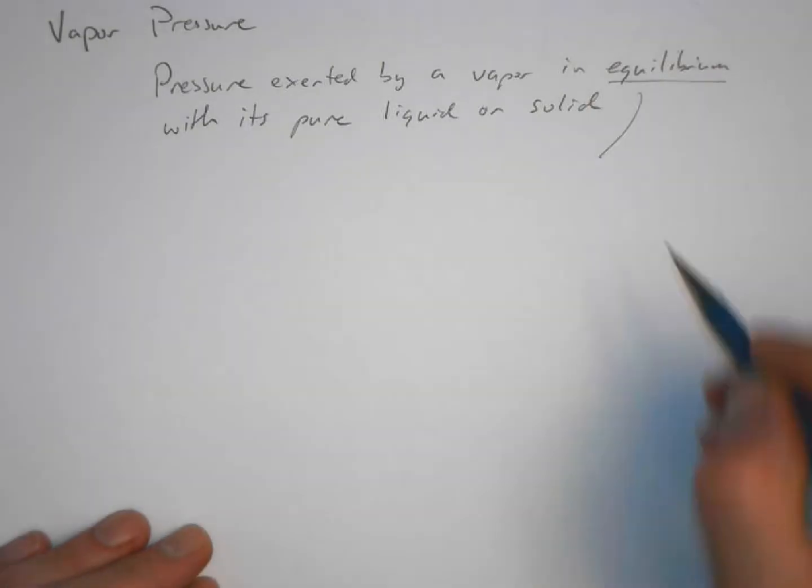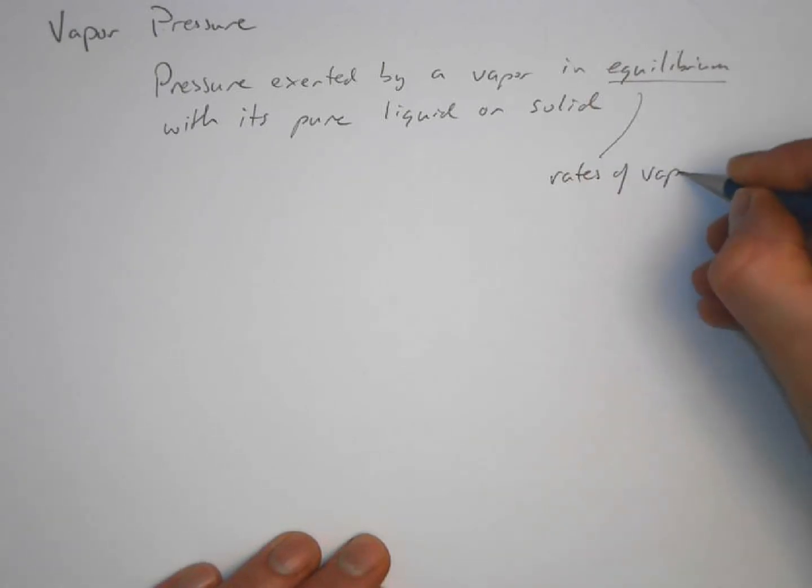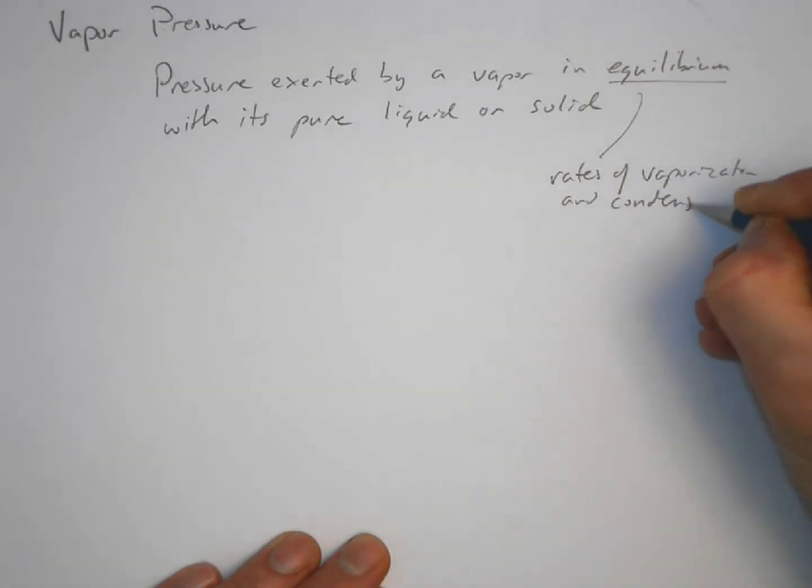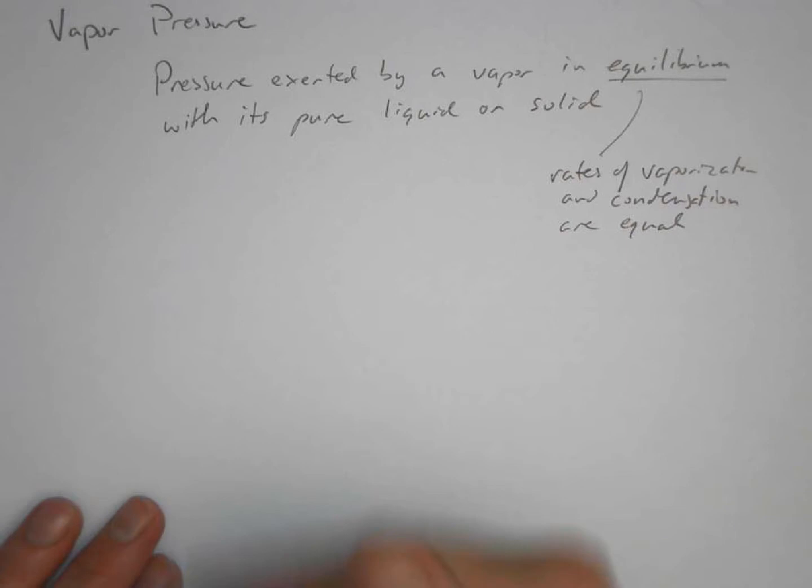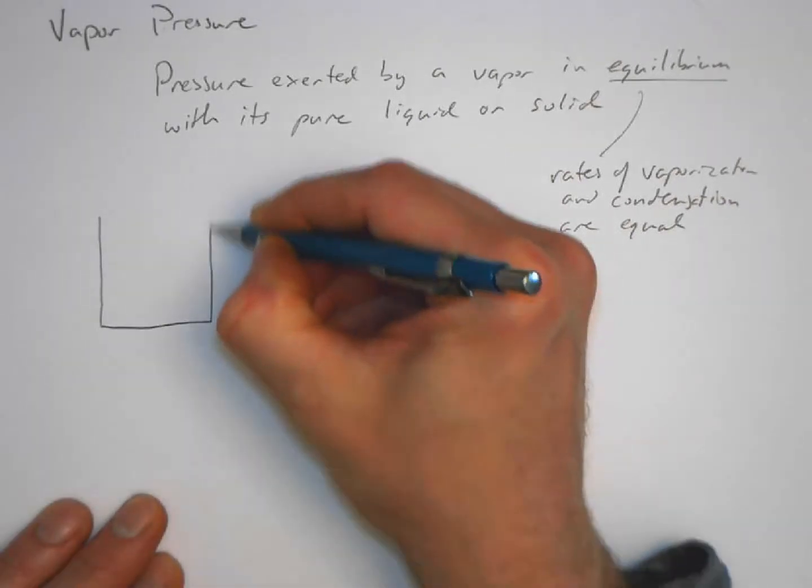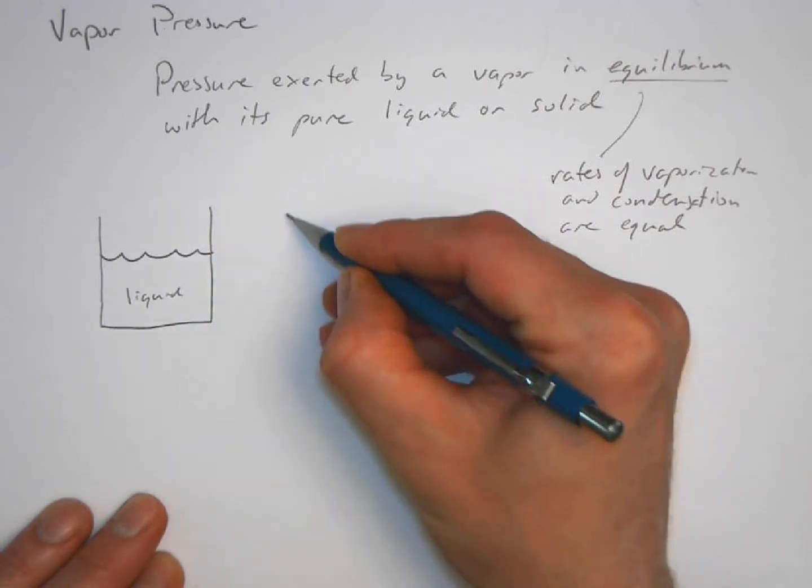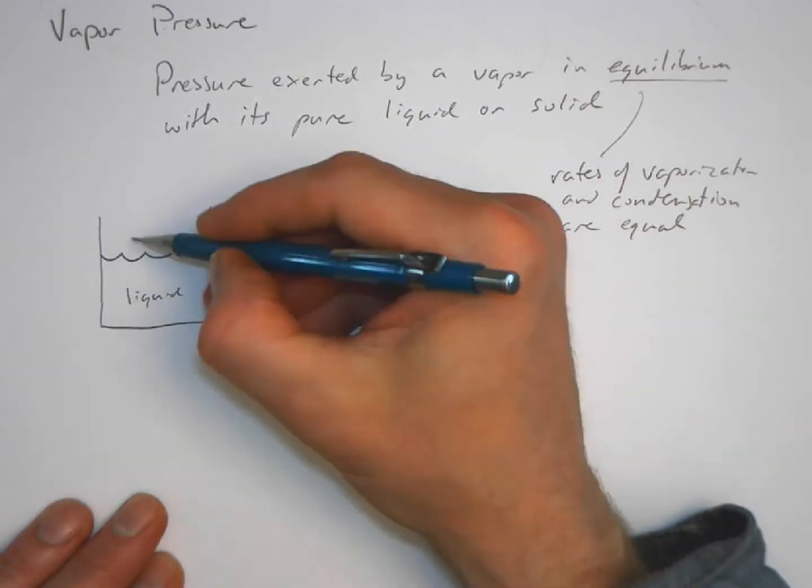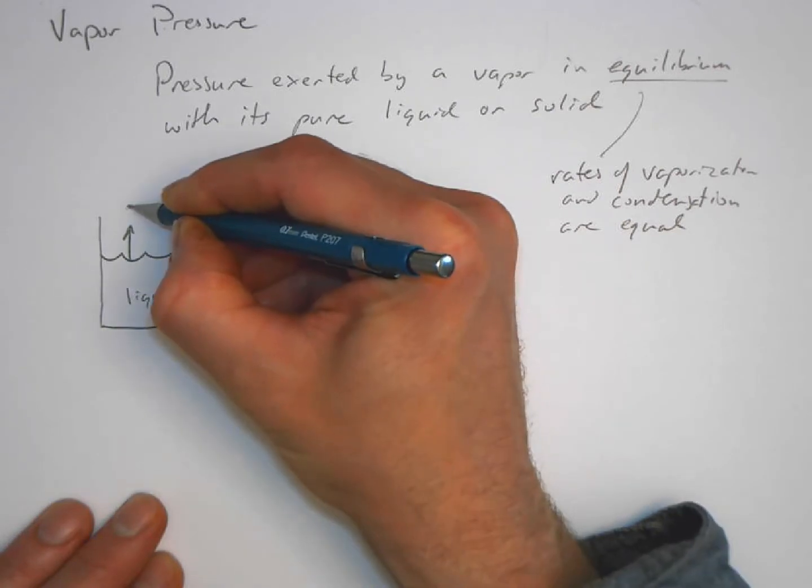At equilibrium, rates of vaporization and condensation are equal. So what's happening is this: we have a container with some liquid in it, for example, or we could have a container with some solid in it. There's material that's in the liquid phase and then particles that are in the gas phase.